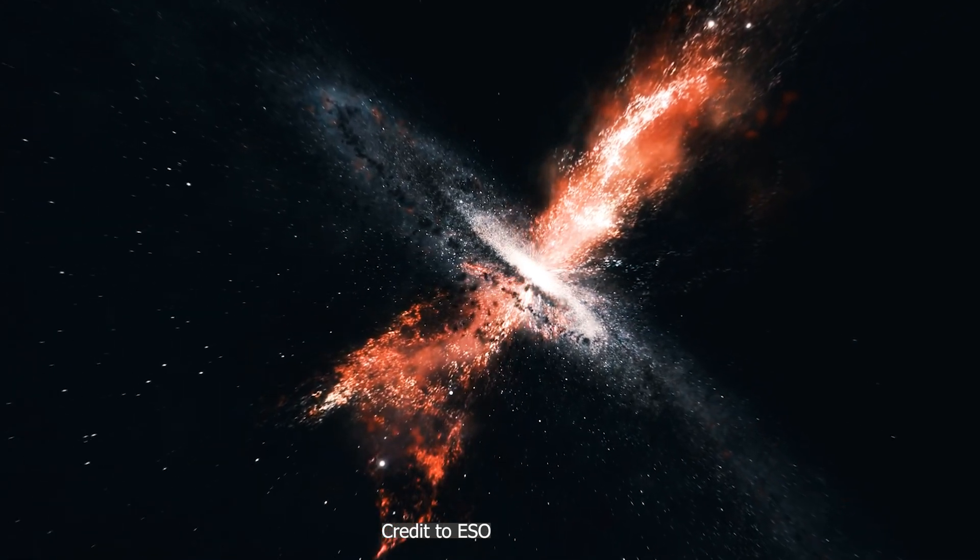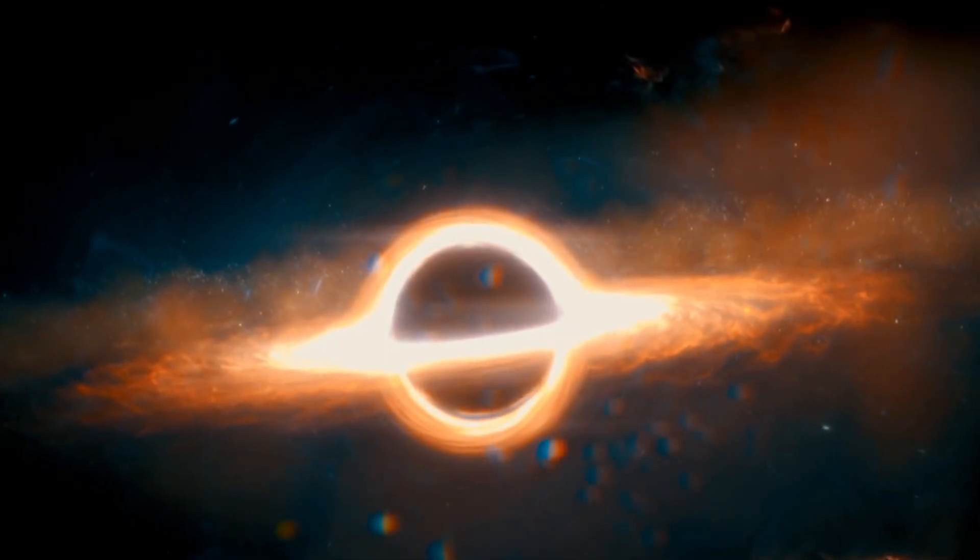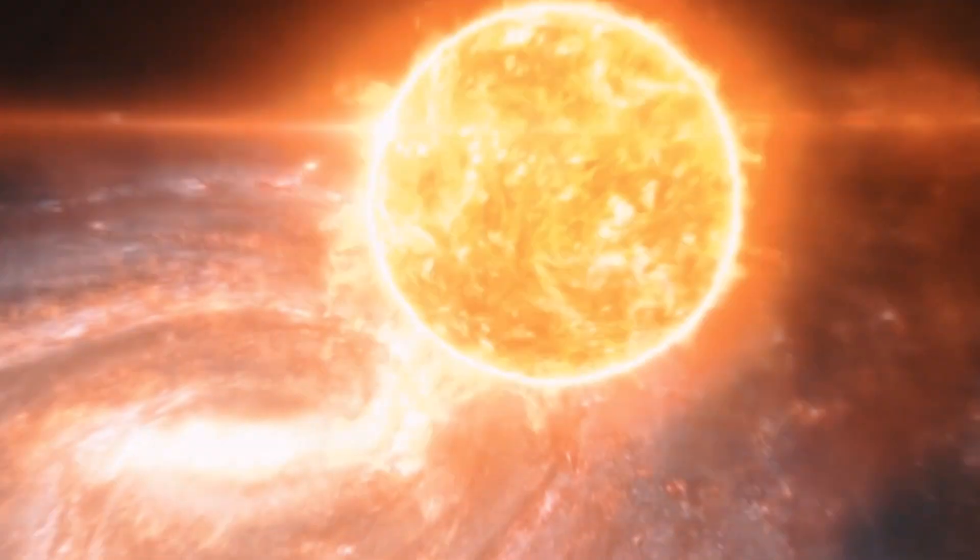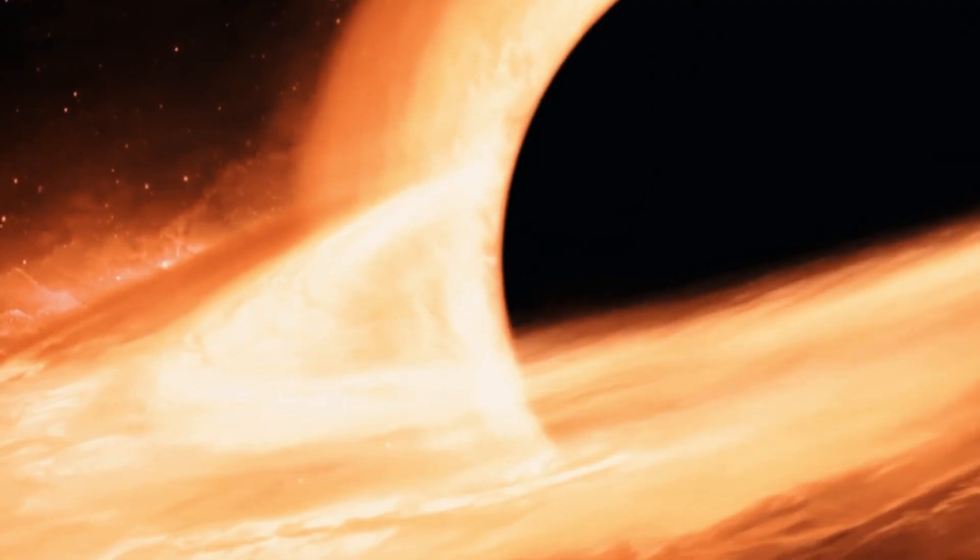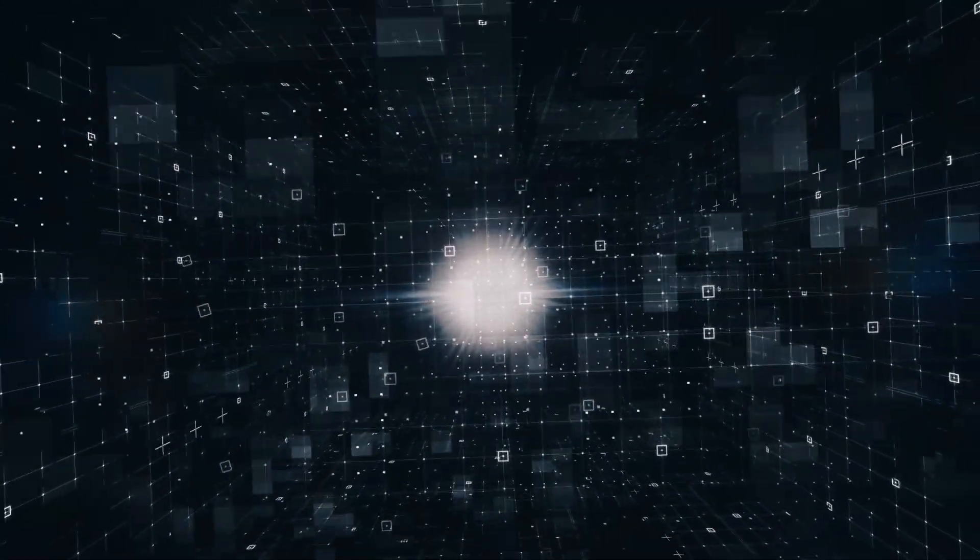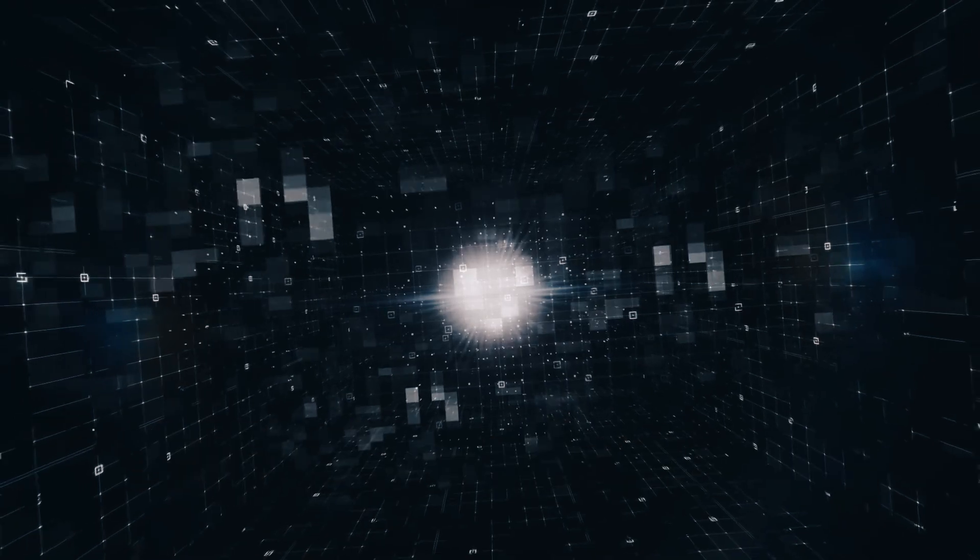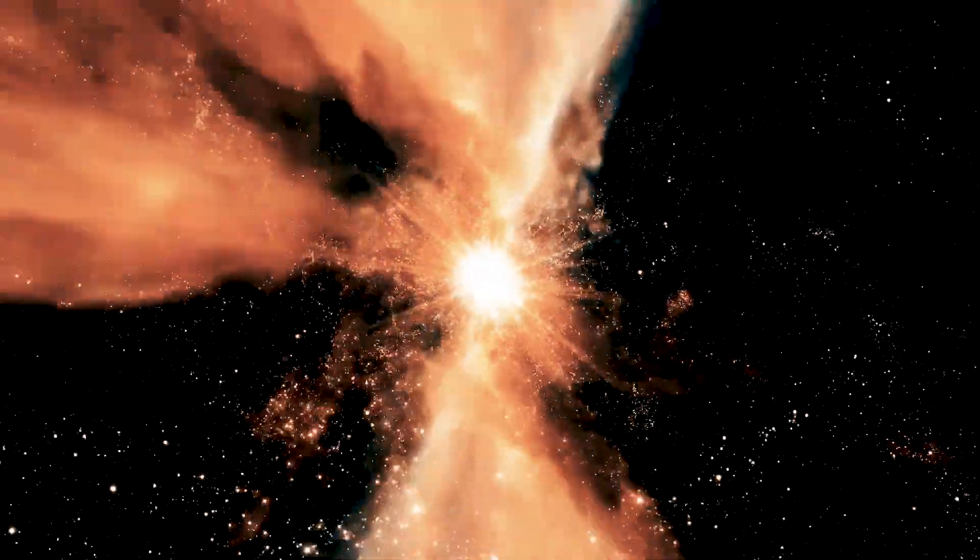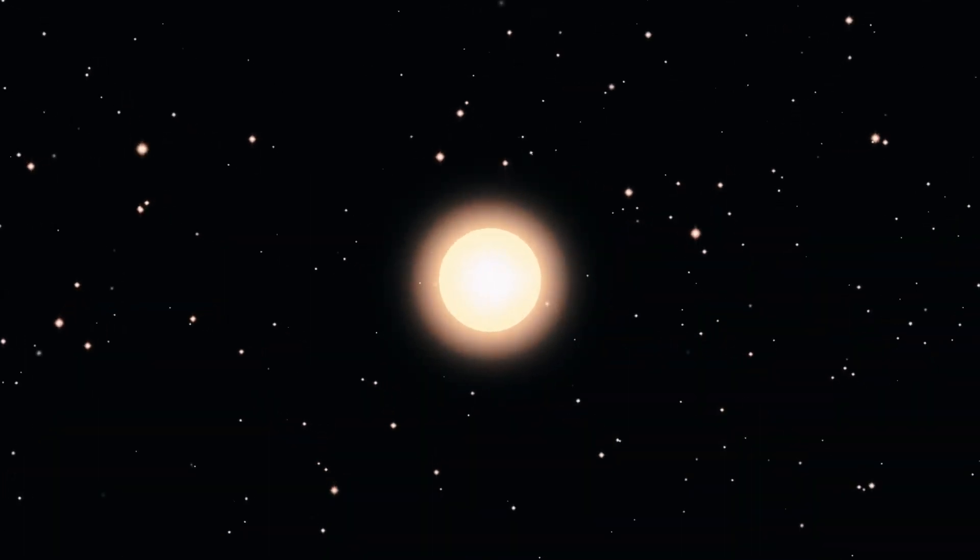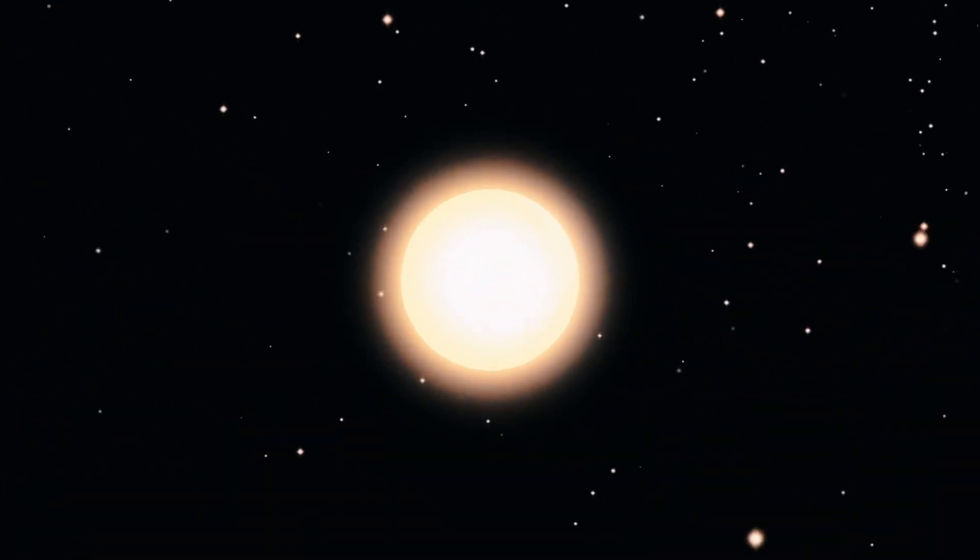You know, supermassive black holes form after a massive star runs out of fuel, sometimes resulting from a supernova, and other times without a supernova, which is called the direct collapse scenario. So how can it be possible? Because the first star of the universe formed approximately 200 to 400 million years after the Big Bang. HD1 galaxy might have formed approximately 300 million years after the Big Bang. The first star of our galaxy should have been born billions of years ago before the first galaxy of our universe got its shape.